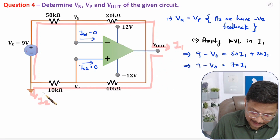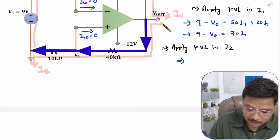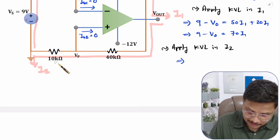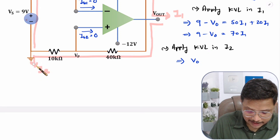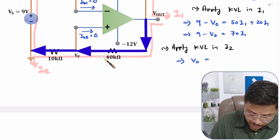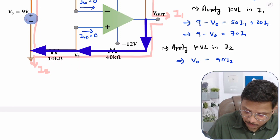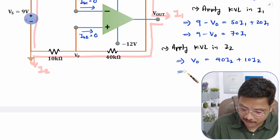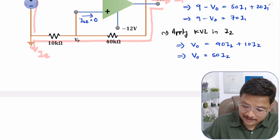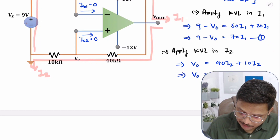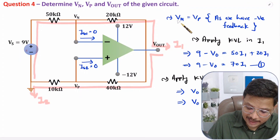To have the second equation based on I2, let us apply KVL in loop I2. In this loop we have Vout going from minus to plus, and the current gets grounded — so there is no other voltage terminal. The equation becomes: Vout equals 40 I2 plus 10 I2, that is Vout equals 50 I2. So now we have two essential equations: equation 1 is 9 minus Vout equals 70 I1, and equation 2 is Vout equals 50 I2.